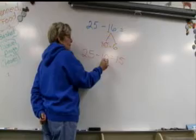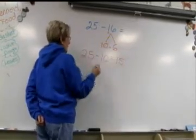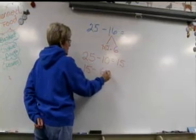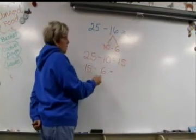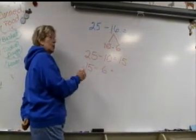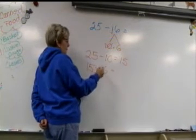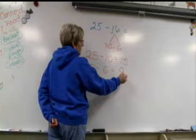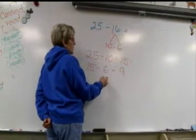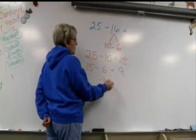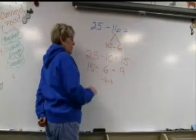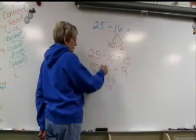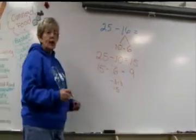Okay, we've subtracted that 10, we're good. Now we bring our 15 down and subtract the 6. They use their number lines, some of them use fingers — whatever system they use to count backwards. 15 take away 6 would be 9. Or if they wanted to do it in smaller chunks, they could take away 3 and 3, or take away 5 first to get to the friendly number of 10. Whatever system they use to subtract.